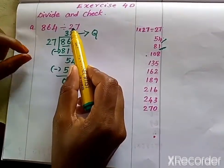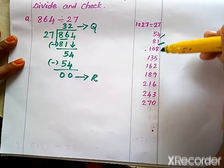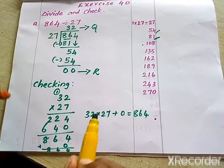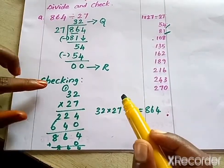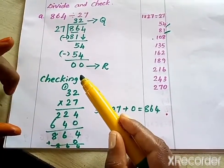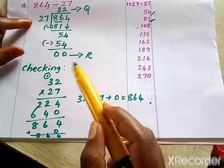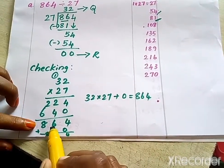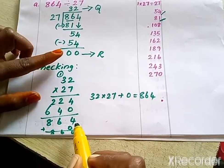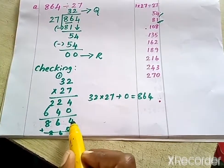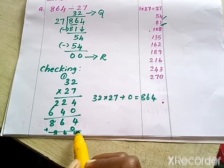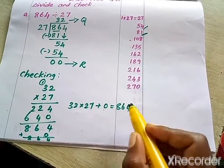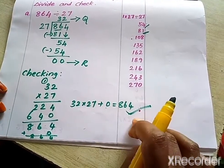The divisor is 27, and writing the table of 27 makes division easier. Now we check whether our division is correct. To check, we multiply the quotient by the divisor: 32 times 27 gives 864. Then we add the remainder, which is 0, and again get 864. So: quotient × divisor + remainder = dividend. Our division is correct.